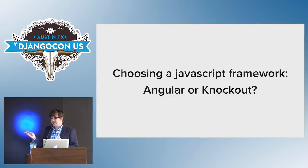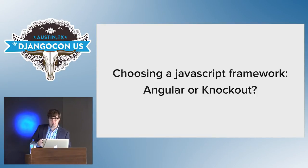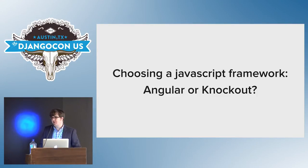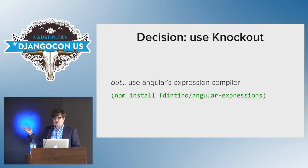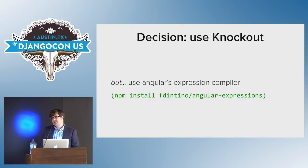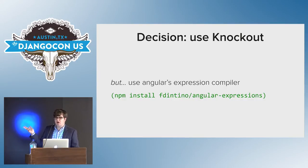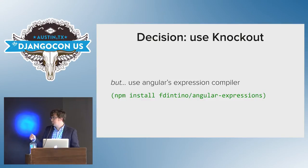I was going to talk about why I picked Knockout over Angular, but I'm a little concerned for time, so I'll skip those slides — run into me and ask me if you're curious. The decision was to use Knockout, as you could tell from the title of the talk. However, I wanted to use Angular's expression compiler — which is definitely weird, I recognize. Somebody had helpfully pulled out that functionality from Angular and created an NPM module, and I forked it because I wanted to add some newer Angular features to it.